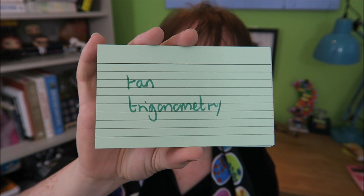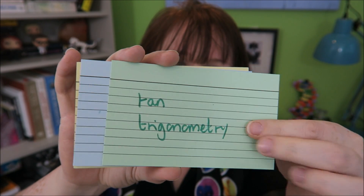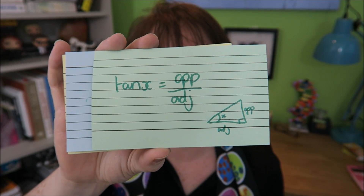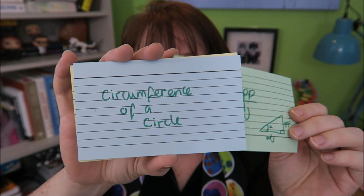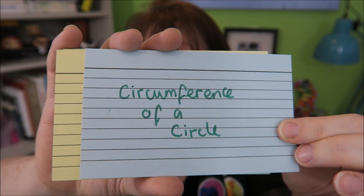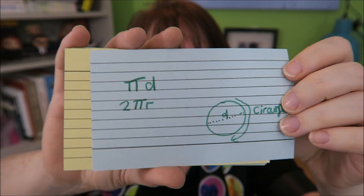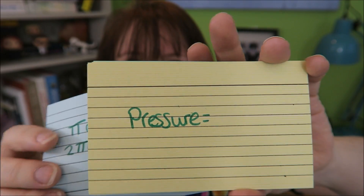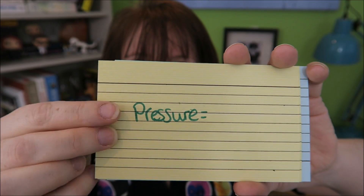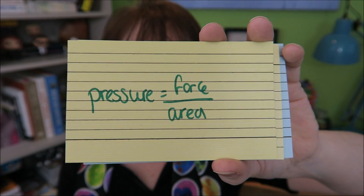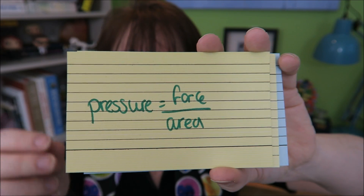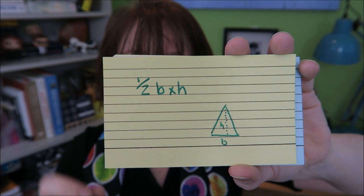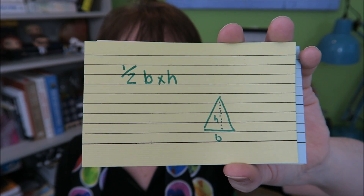The last trigonometry rule you need to know is the tan rule. That's when you have the opposite and the adjacent: tan of X is opposite over adjacent. Circumference of a circle is either pi d or two pi r. Pressure equals force over area. Area of a triangle is half base times height.